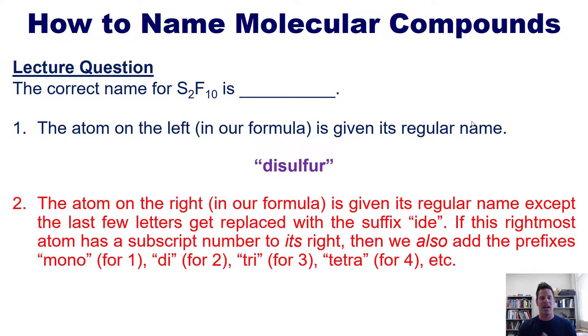Now on to step two. The atom on the right is given its name, except we tack on the suffix '-ide' at the end, and the prefix that corresponds to the number in its subscript. So this is not called fluorine in our name. It's called fluoride. And it has a number 10 next to it. What prefix do we use for 10? Yeah, it's deca. Hence the total correct name for this formula is disulfur decafluoride.